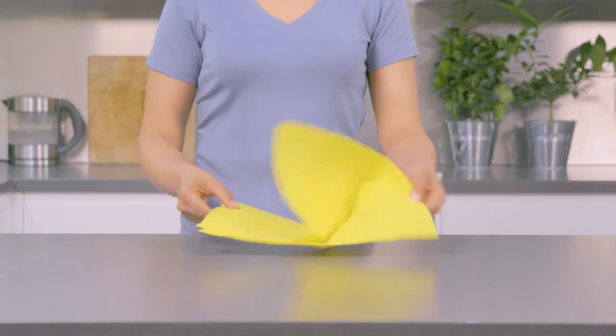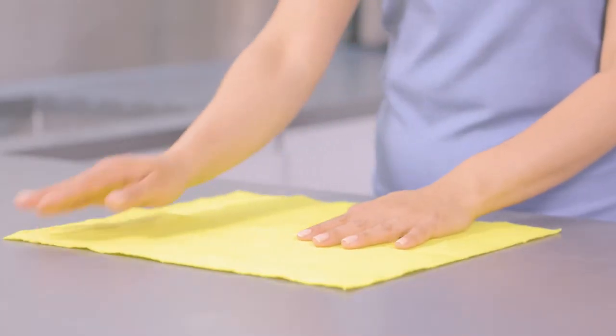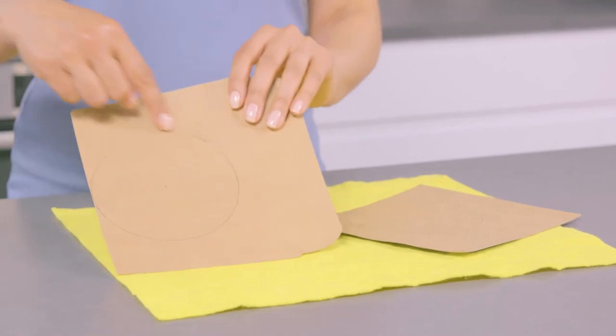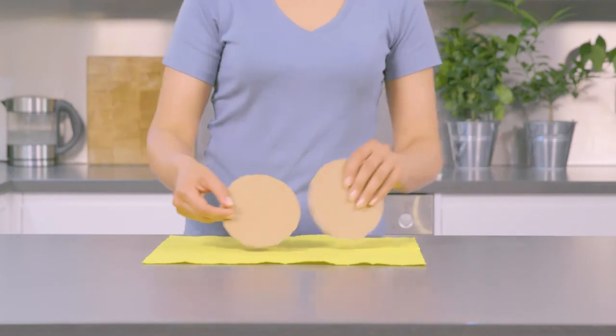Firstly, lay out a kitchen cloth to protect your workspace. Cut two cardboard circles about 10 centimeters in diameter. We've already cut ours out.